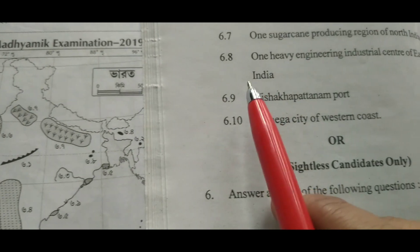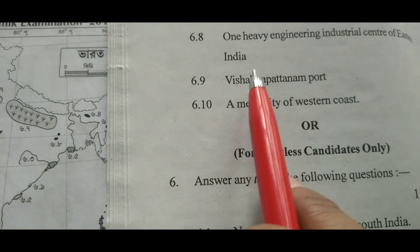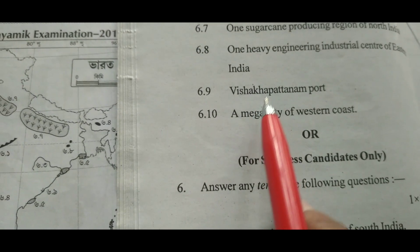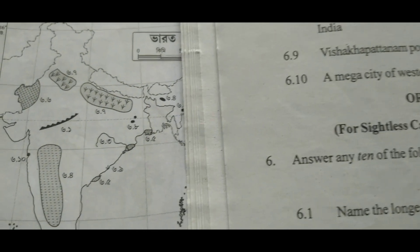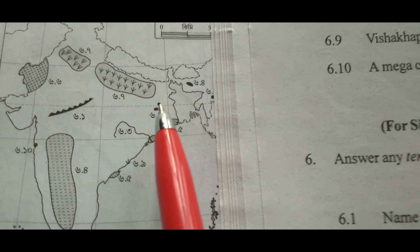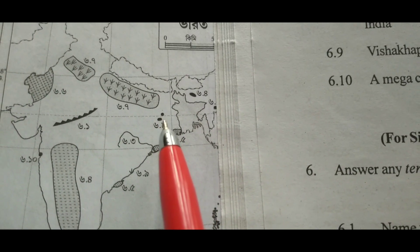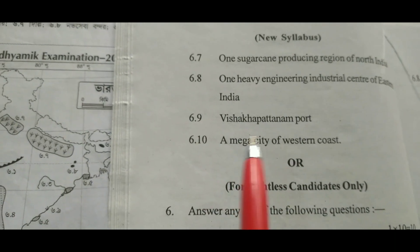6.8: One Heavy Engineering Industrial Center of Eastern India — the answer will be Durgapur or Jamshedpur. You may point out any one and that will be correct.